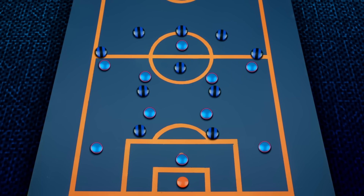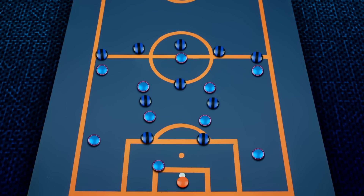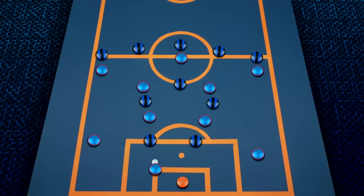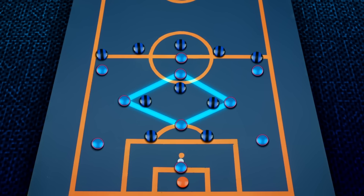First, Inter did look to press Man City high up the pitch, with the initial idea being to block off the central passes into the two pivots, being shadow-marked by the strikers. However, one rotation forced Inter to adapt their positioning. While City lined up as a 3-2-4-1, it instantly transformed into a 3-4-3 diamond, the iconic system used in Cruyff's total football.